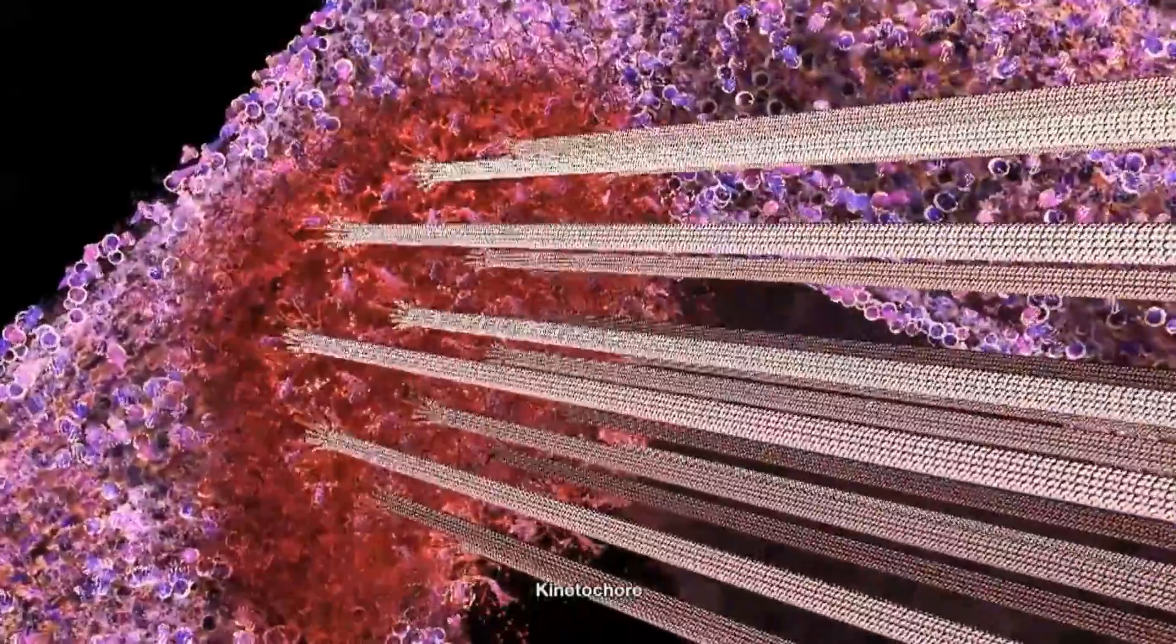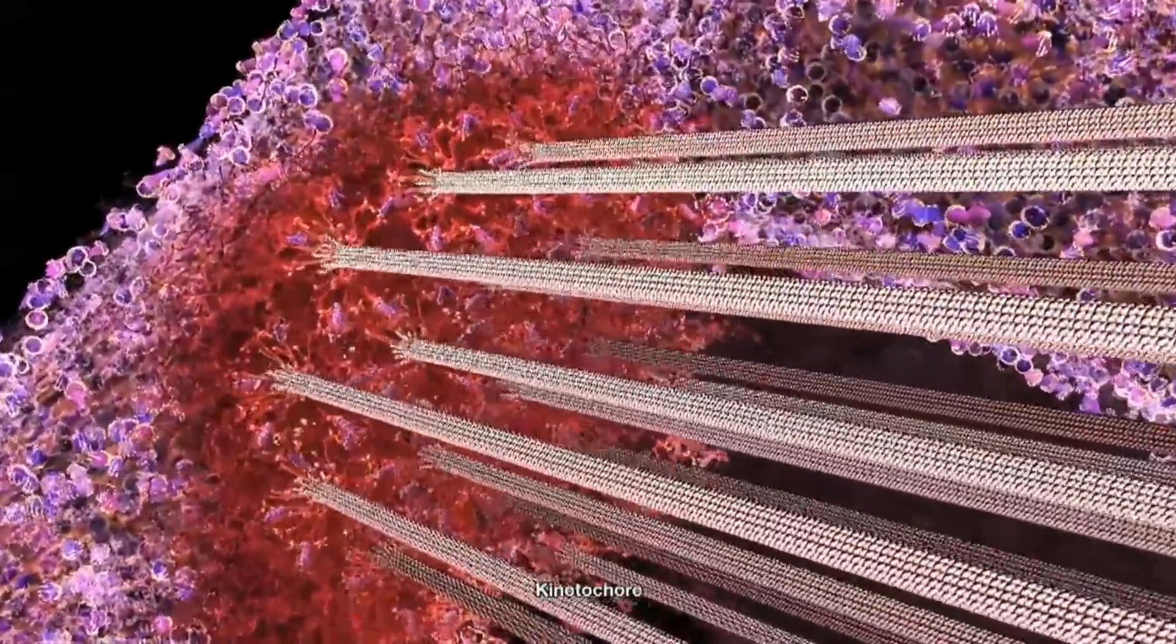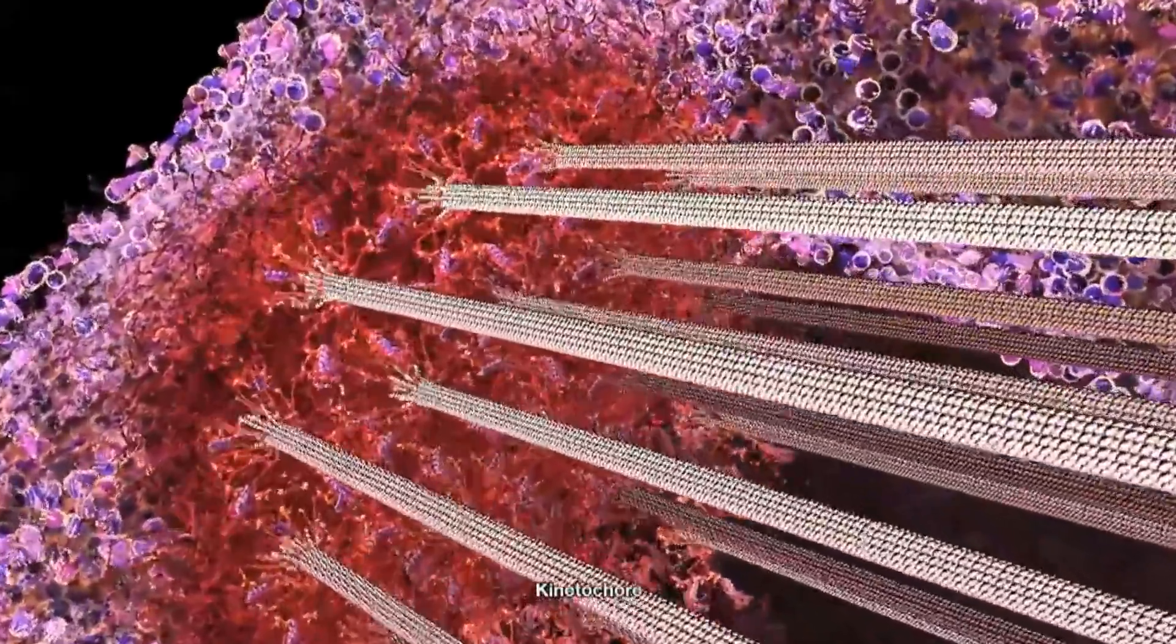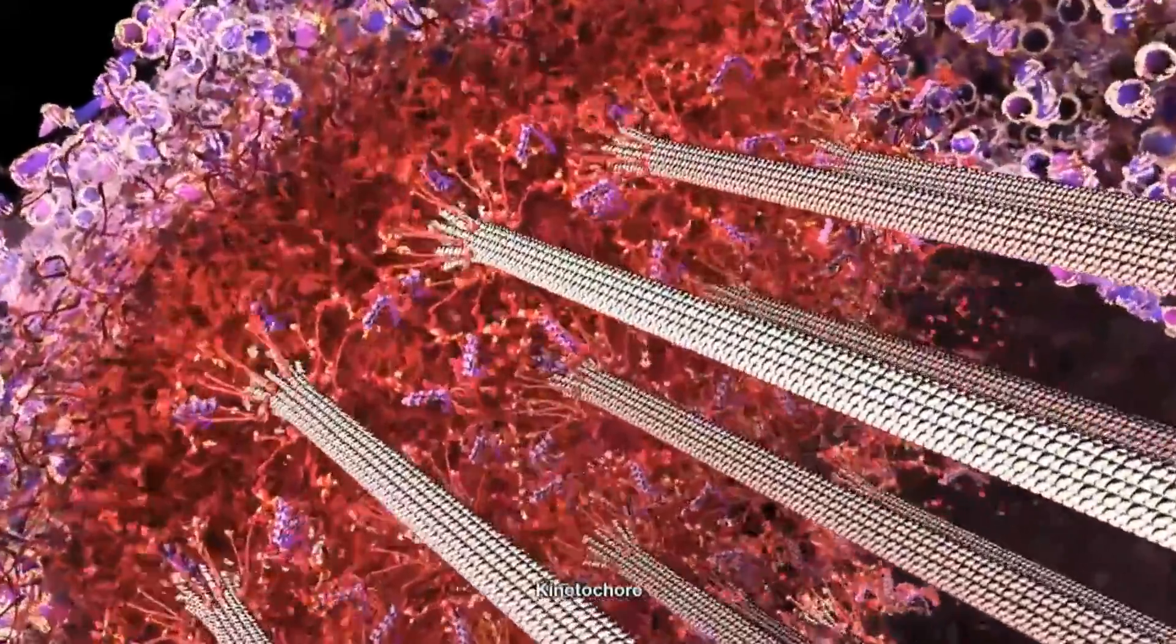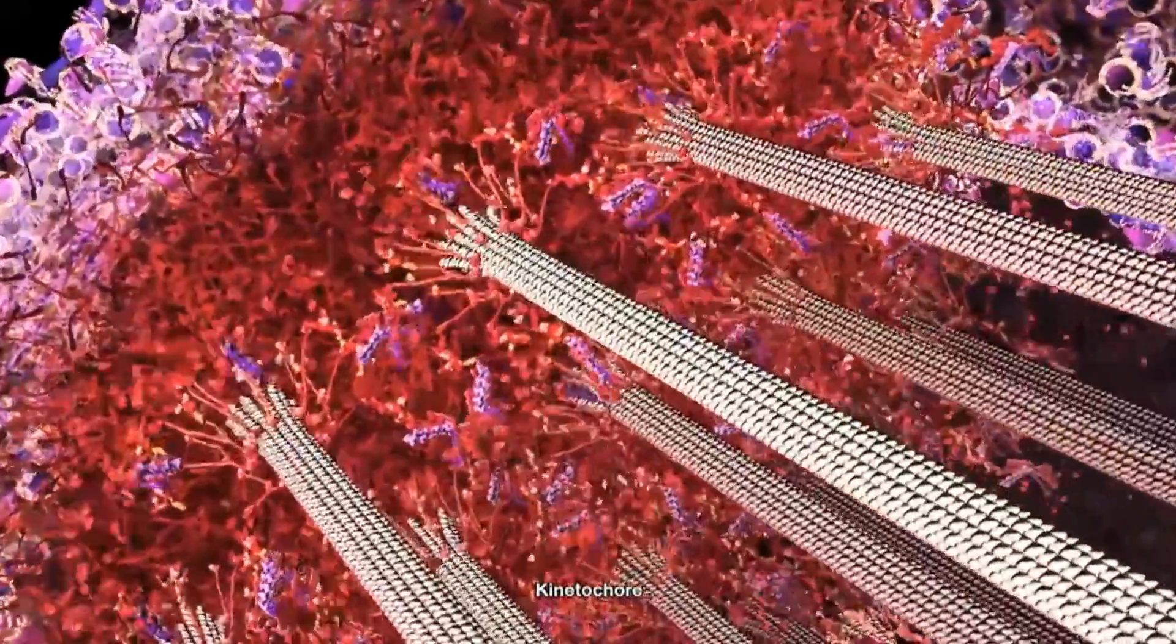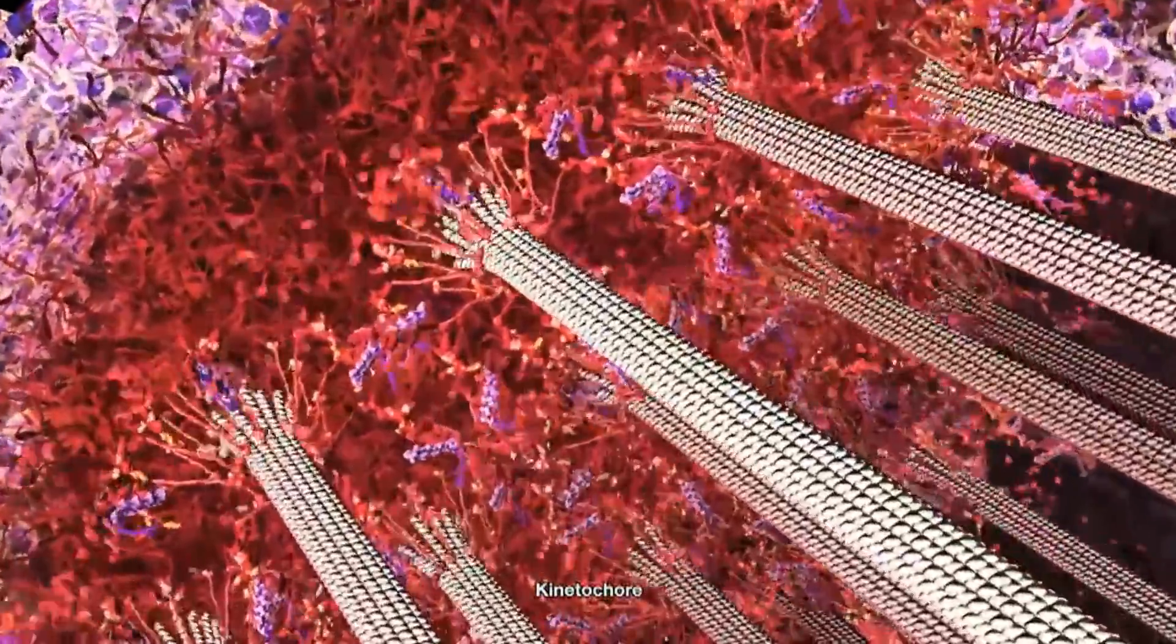The kinetochore is central to the movement of the chromosomes and is able to hang on to the dynamic ends of the microtubules. It is also a mechanical tension-sensing system, which is able to feel if everything is correctly attached and positioned.